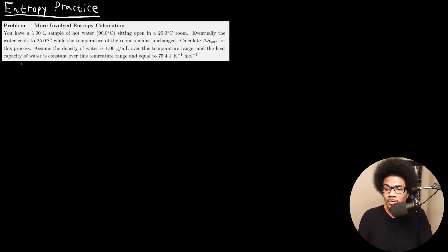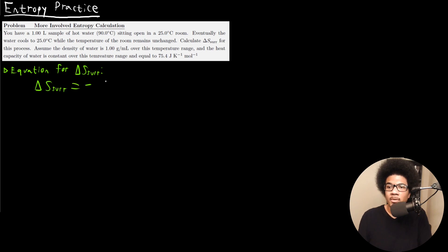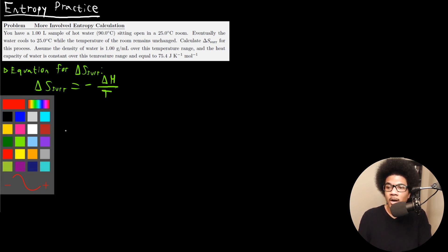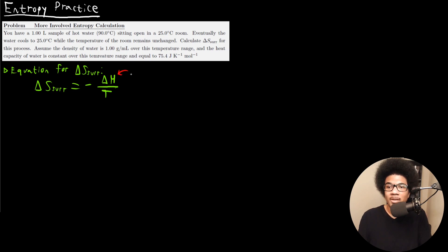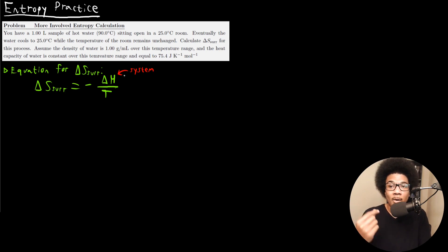We're going to use our entropy equation. Delta S of the surroundings is equal to negative delta H over the temperature. Here, delta H refers to the delta H for the system — in this example, the hot water. The temperature in this case is the temperature of the surroundings, the 25 degrees Celsius room.